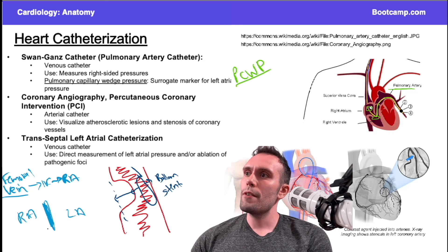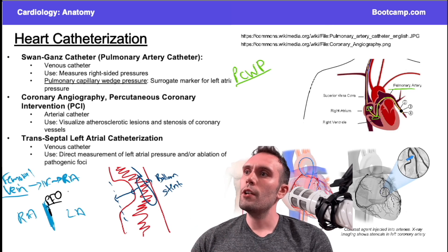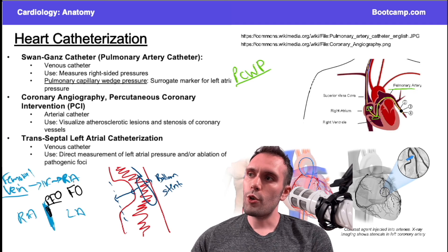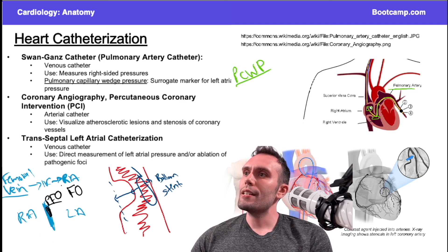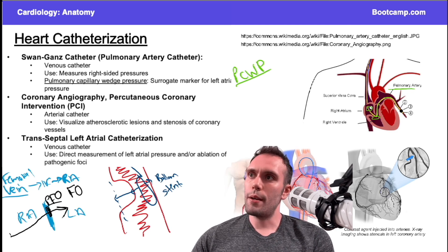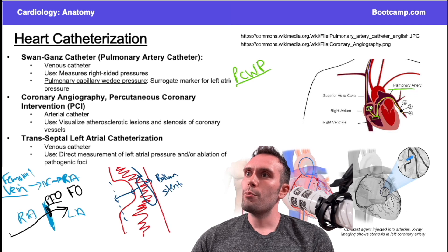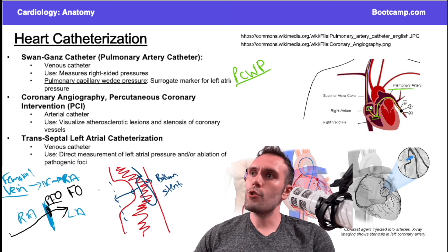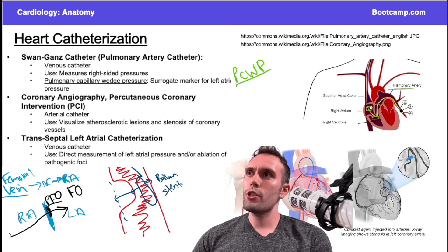About 25% of people have a PFO — a patent foramen ovale — in the interatrial septum. The other 70–80% have a fossa ovalis, a thin area of fibrous tissue that sealed up the foramen ovale early in life. The catheter can be pushed through this thin membrane into the left atrium. This is used for ablation of pathogenic foci in atrial fibrillation, to reach the pulmonary vein ostia, and also allows direct, more accurate measurement of left atrial pressure compared to using Swan-Ganz PCWP.